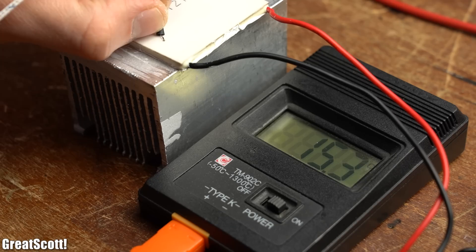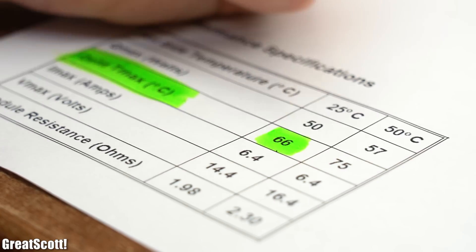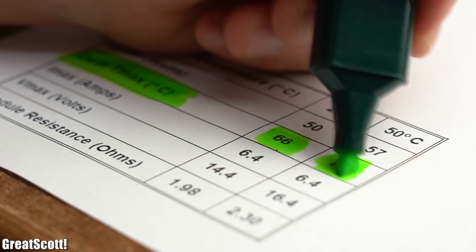But as the hot side gets warmer the cold side also gets warmer because the Peltier module can only sustain a certain temperature difference between its two sides.